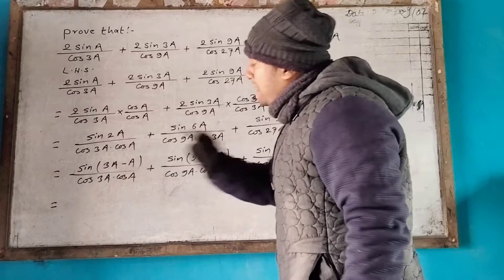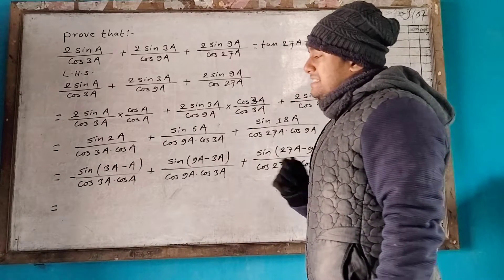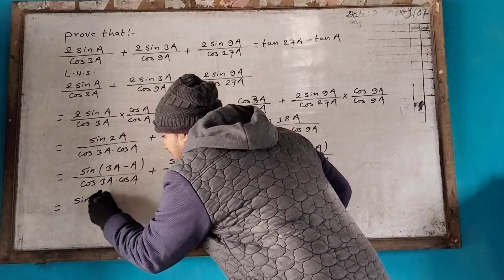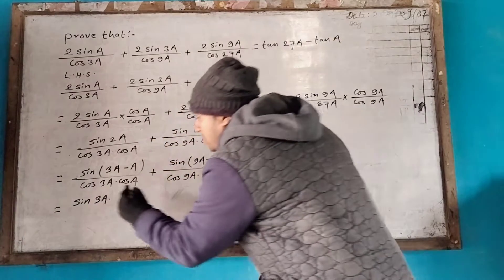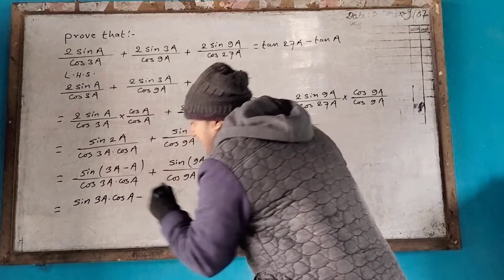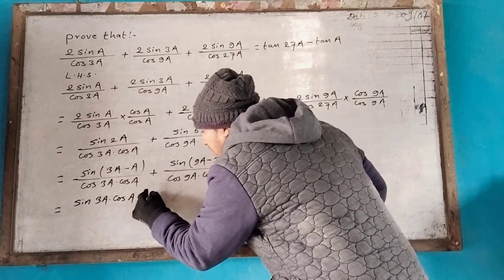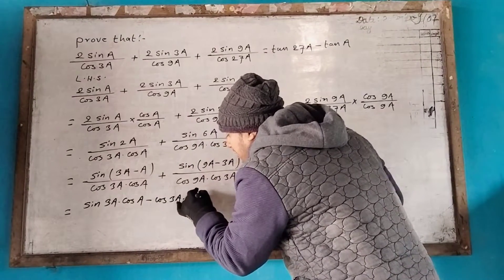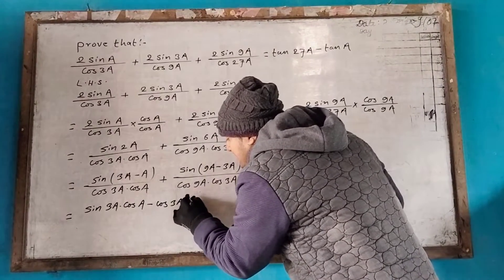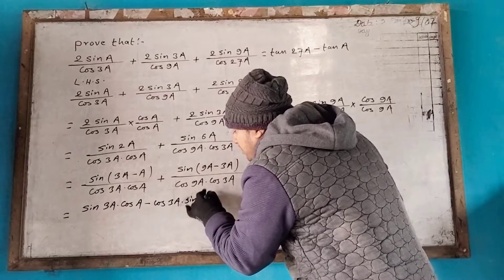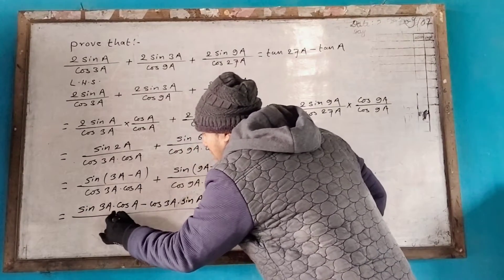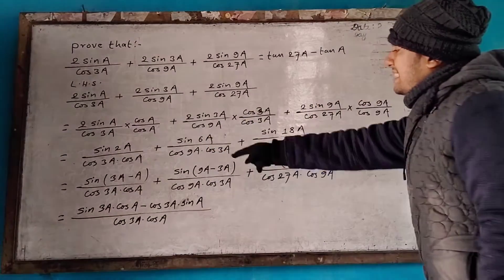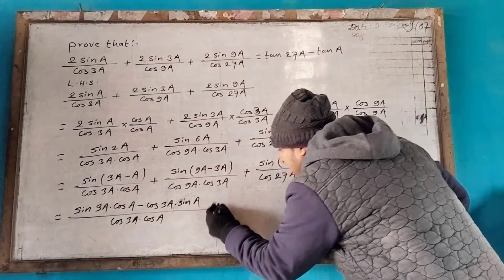It's like sin(A − B). So sin a into cos b, minus cos a into cos b, connection sin b. Divided by cos 3a into cos a.